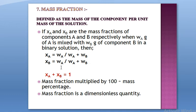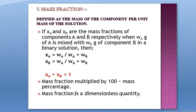Like mole fraction, for a binary solution Xa + Xb = 1, and for more components Xa + Xb + Xc + ... equals 1. The summation of all mass fractions equals 1. Mass fraction is also a dimensionless quantity with no units. Once you have the mass fraction, multiply by 100 to get the mass percentage of that component.